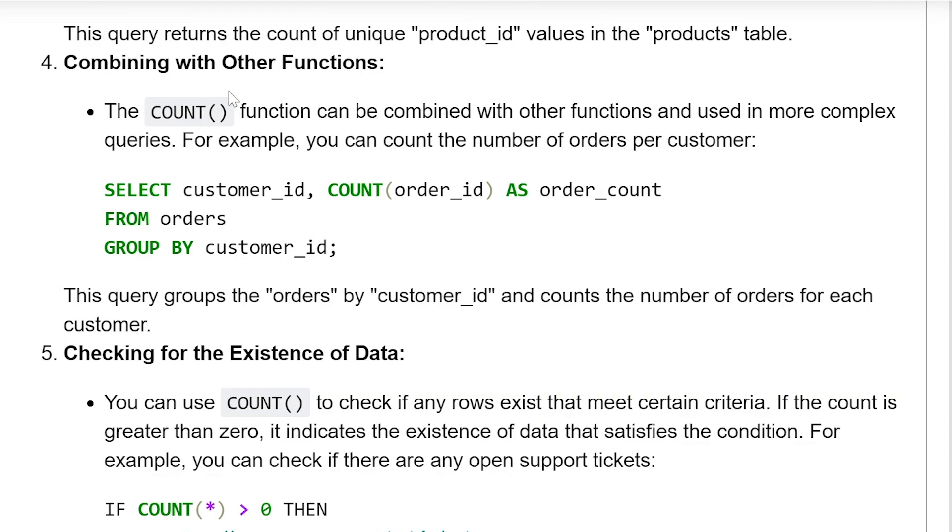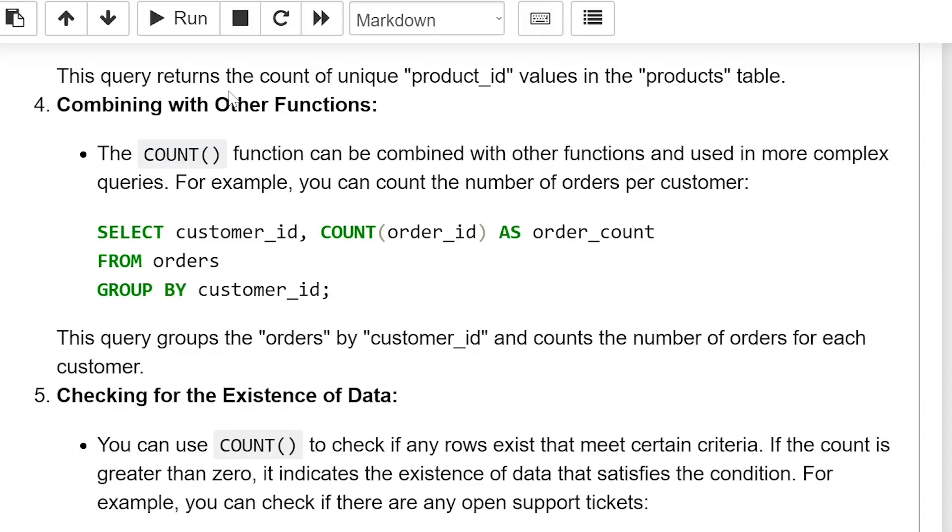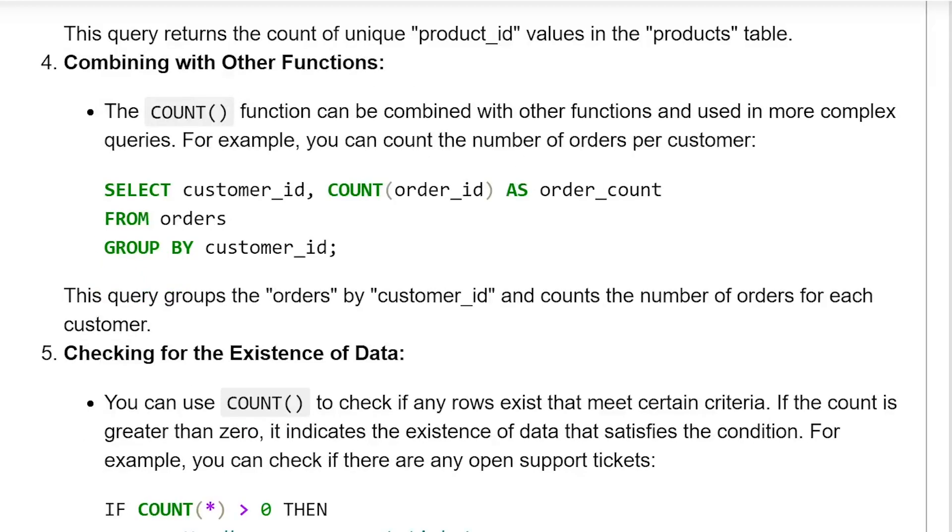Combining with other functions. The count function can be combined with other functions and used in more complex queries. For example, you can count the number of orders per customer. Select customer ID, count order ID as order count from orders group by customer ID. This query groups orders by customer ID and counts the number of orders for each customer.